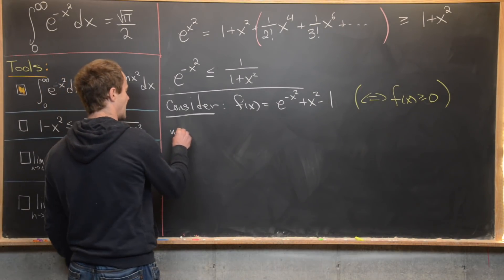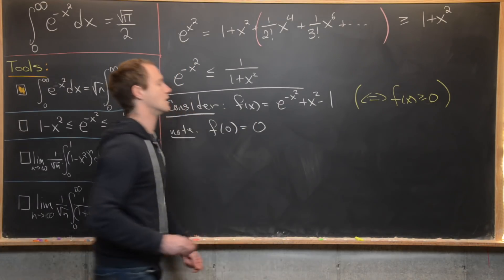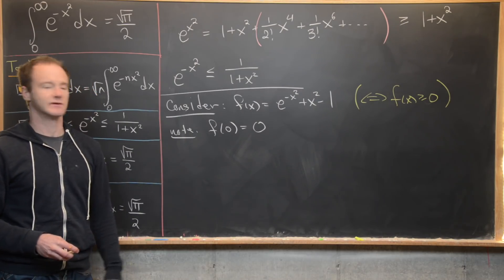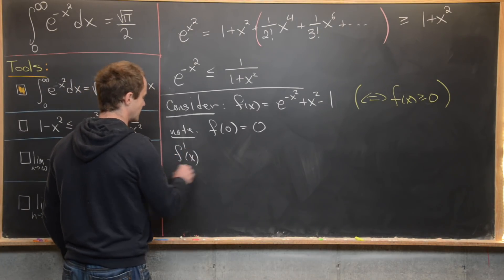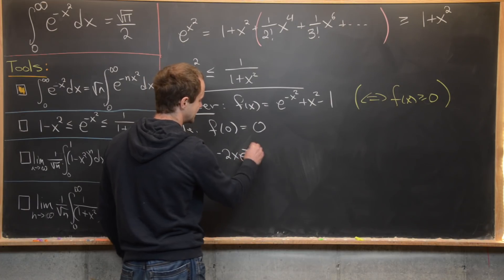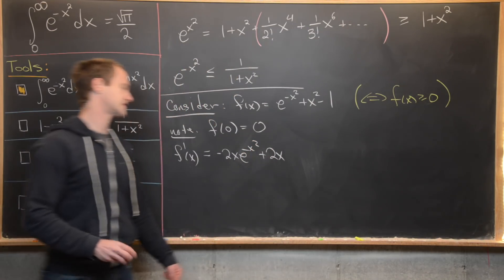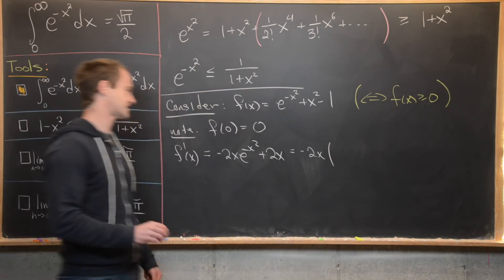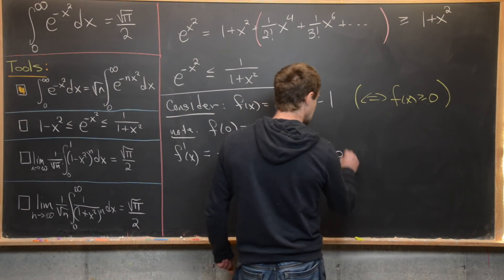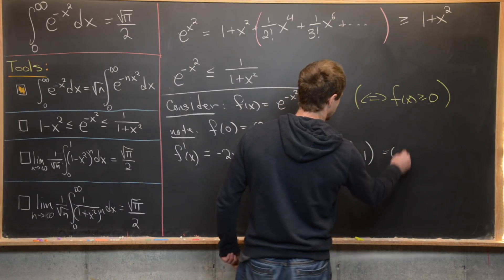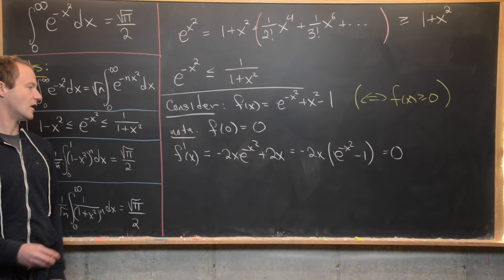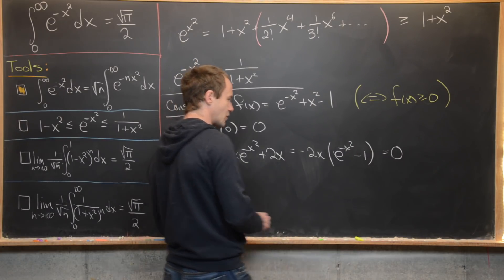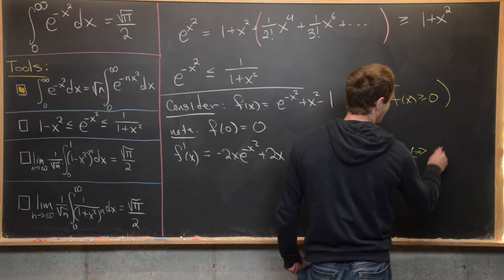We check that f(0) = e to the 0 plus 0 minus 1 = 0. Taking the derivative: f'(x) = minus 2x e to the minus x squared plus 2x, which factors as minus 2x times (e to the minus x squared minus 1). Setting this to 0, the only critical point occurs at x equals 0.